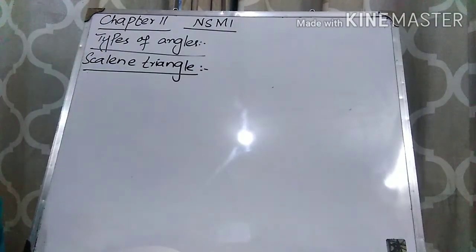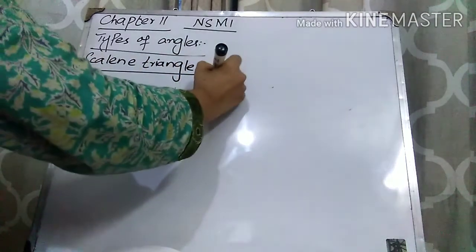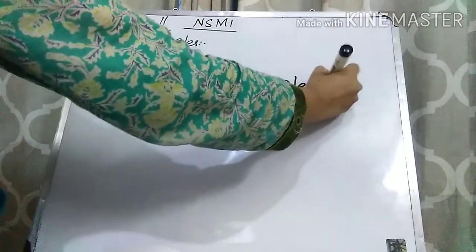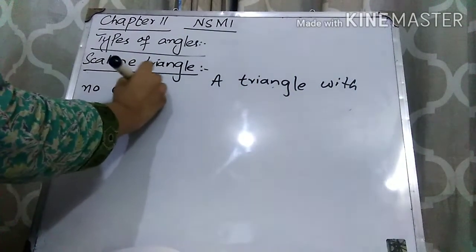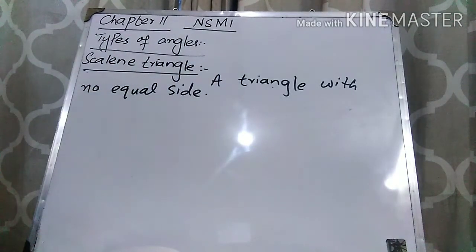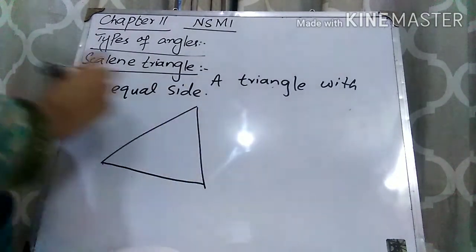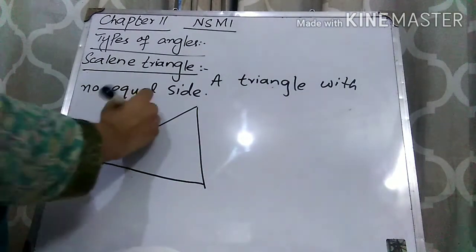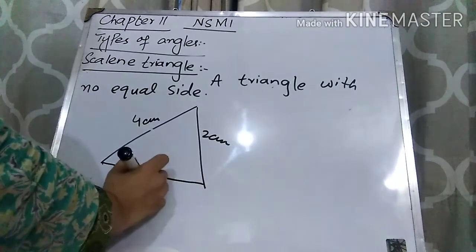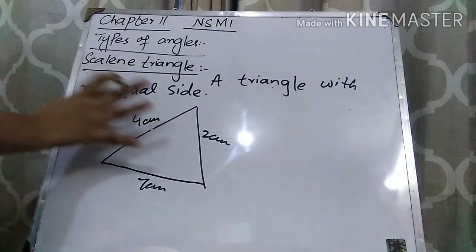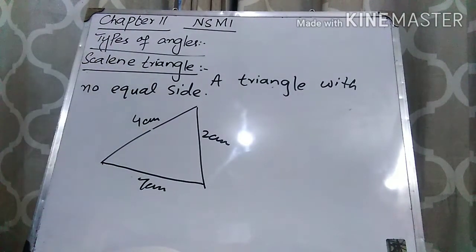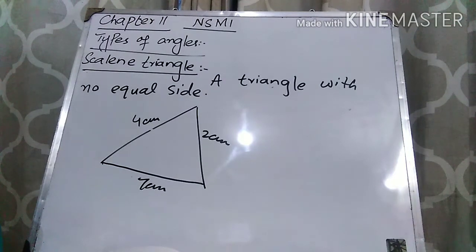Scalene triangle is a triangle which has no equal sides. So a triangle with no equal side is called a scalene triangle. In a scalene triangle, no side is equal and no angle is equal. Now let's come to the acute angle triangle.